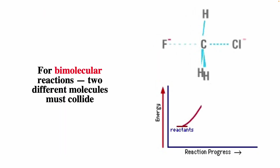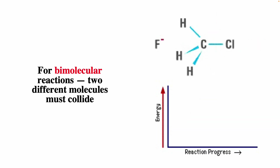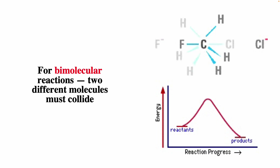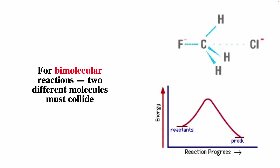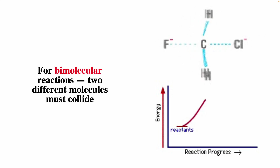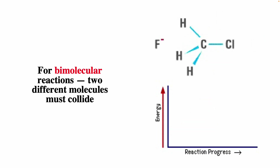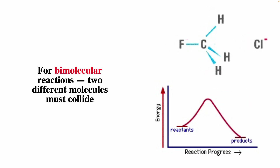When a fluoride ion approaches a methyl chloride molecule, a bond begins to form between the fluoride and the carbon. The molecule's carbon-chlorine bond lengthens and becomes weaker. The energy of the system increases. As the carbon-fluoride bond forms and the carbon-chlorine breaks, a configuration of maximum energy is reached, called the transition state. As the reaction proceeds to completion, the energy of the system decreases.